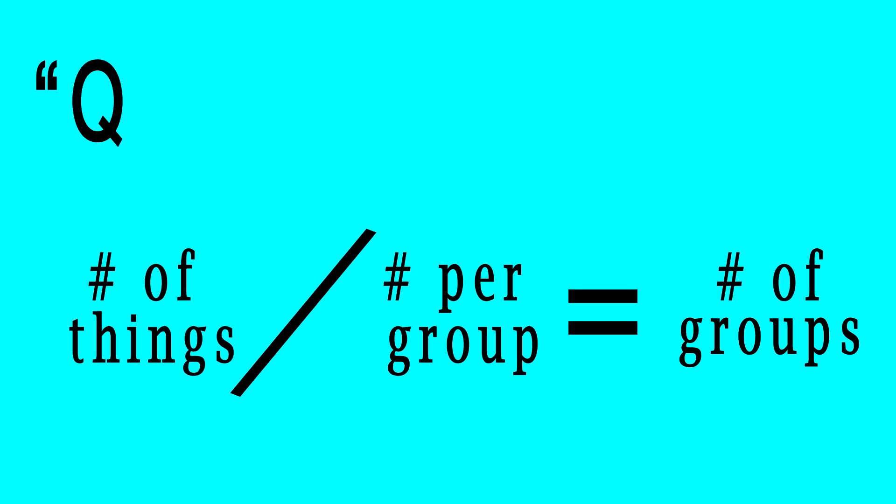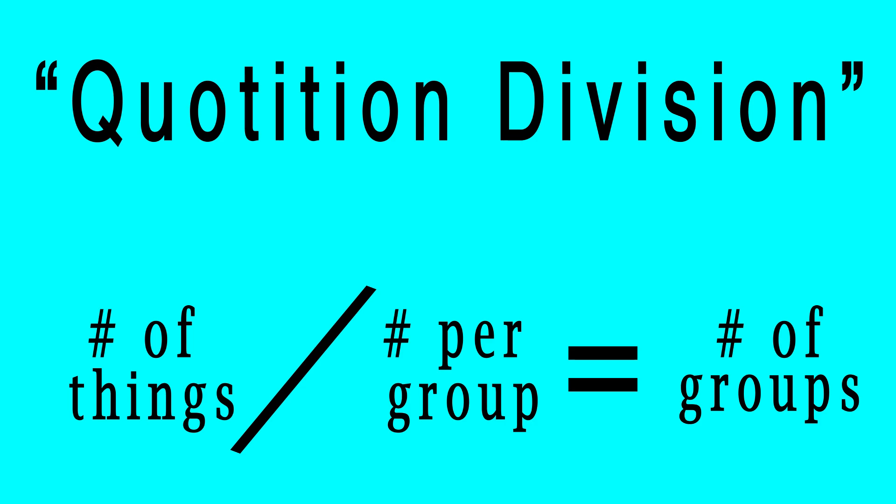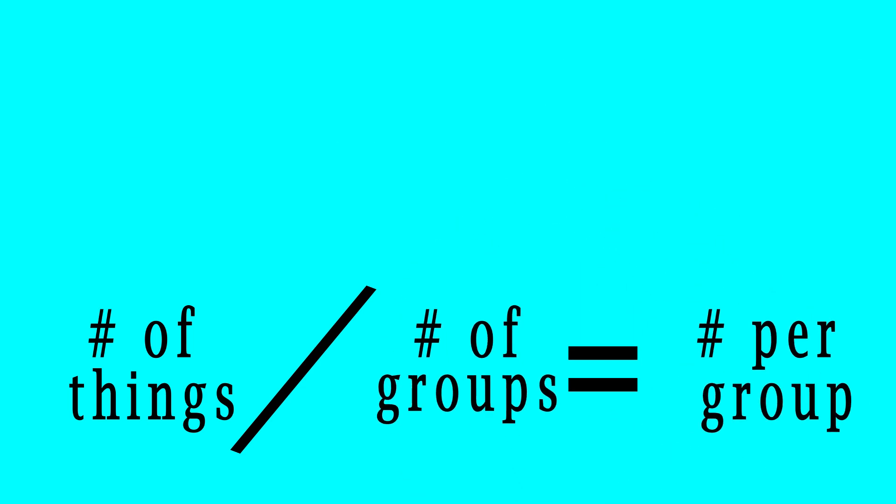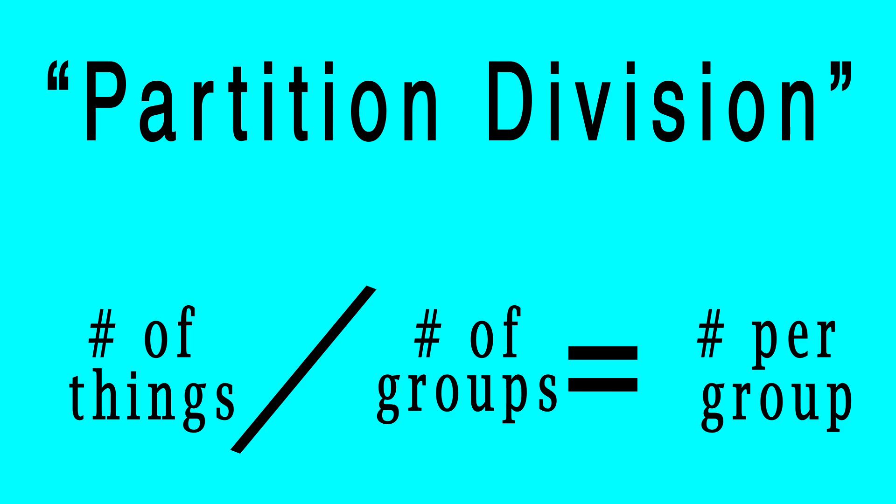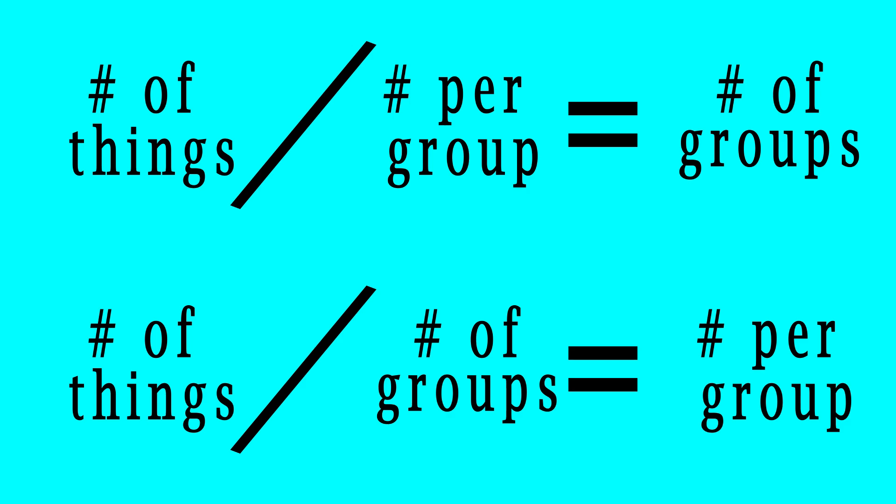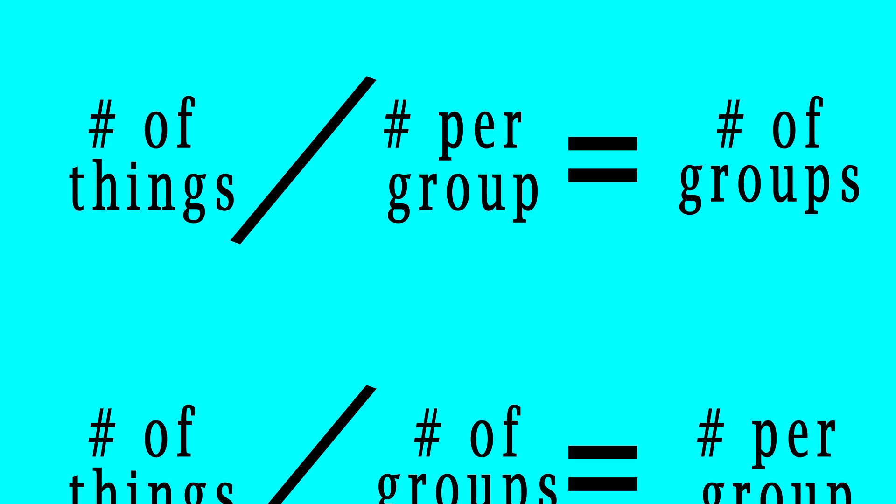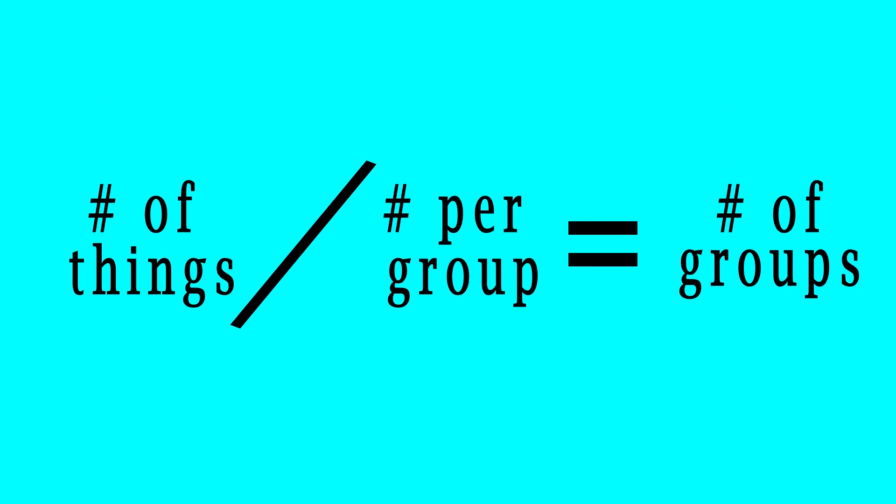This way of seeing division is what's called Quotition Division. It's actually possible to flip these two, which gives us the partition method of seeing division. Mathematically, there's no difference between these, the numbers will always end up the same. So to keep things simple, I will be using Quotition for this explanation, and then I can explain partition at the very end.